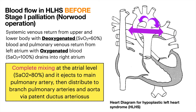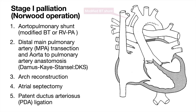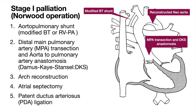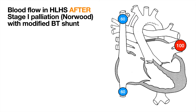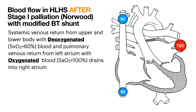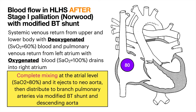Stage 1 palliation is composed of an aortopulmonary shunt (modified BT shunt or RV-to-PA conduit), main pulmonary artery transection, aorta-to-pulmonary artery anastomosis, Damus-Kaye-Stansel anastomosis, arch reconstruction, atrial septectomy, and PDA ligation. After Stage 1 palliation with a modified BT shunt, complete mixing still occurs at the atrial level with sat becoming 80%, which then ejects to the neo-aorta and distributes to branch pulmonary arteries via the modified BT shunt and to the descending aorta.